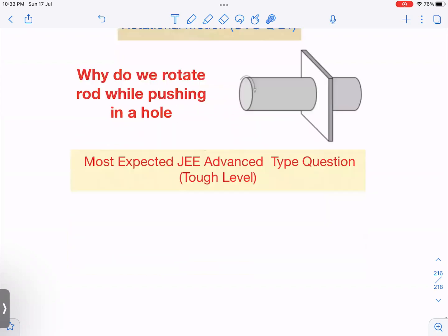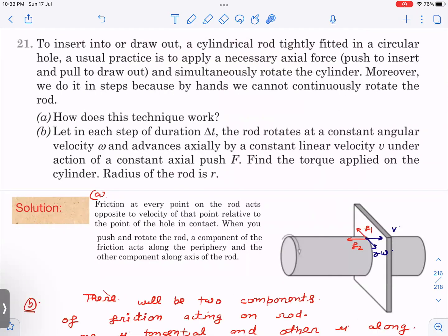Let us see what is the question and how to solve it. To insert or draw out a cylindrical rod tightly fitted in a circular hole, you can see this diagram, usual practice is to apply a necessary axial force and simultaneously rotate the cylinder. Moreover, we do it in steps because by hands we cannot continuously rotate the rod.